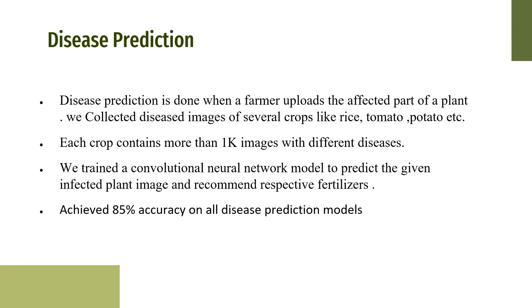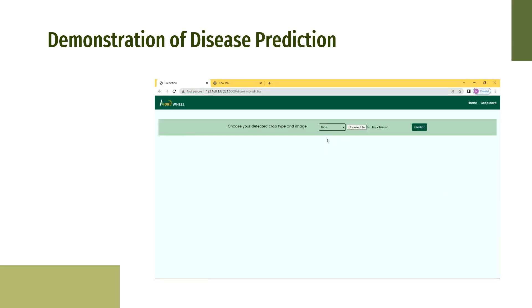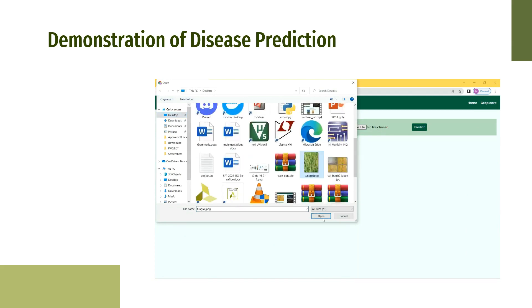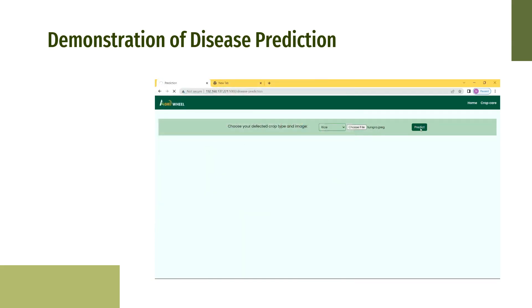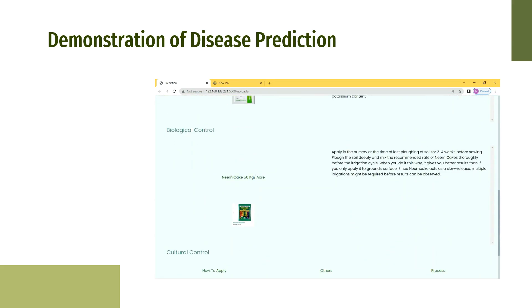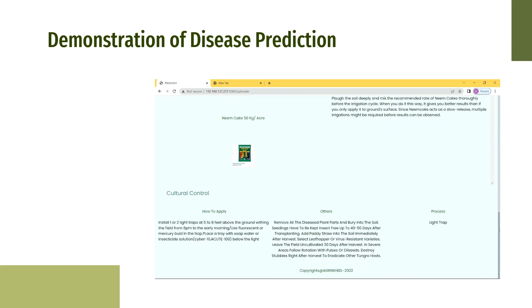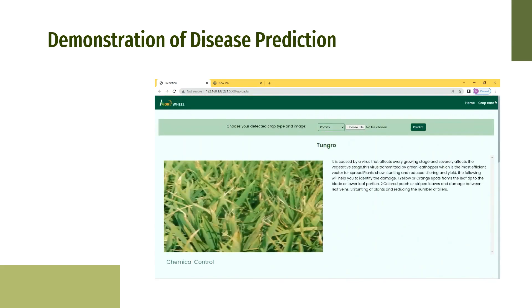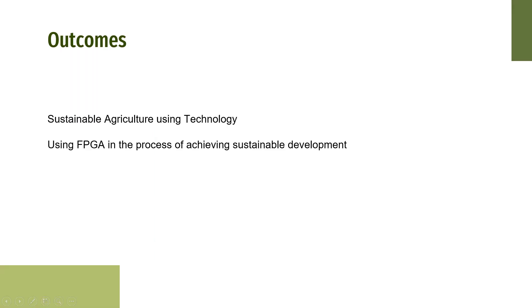Disease Prediction: Pests are a major issue in the agriculture sector. We developed a model for disease prediction and achieved 95% accuracy on the data.